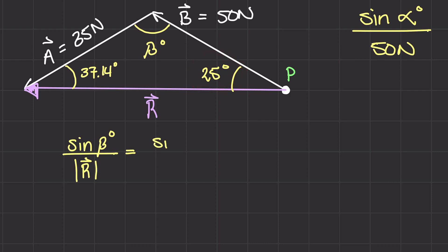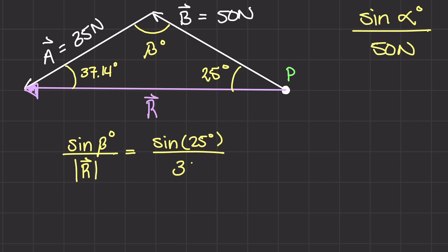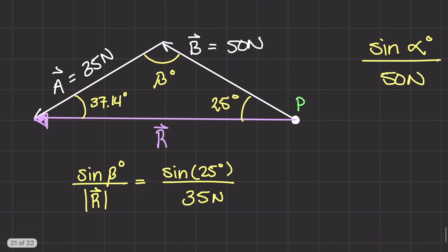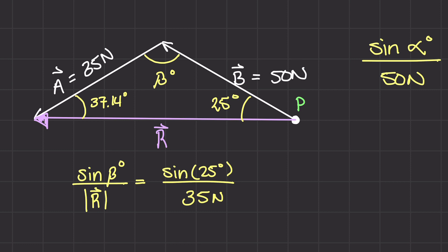Sine of 25 degrees over its opposite side, which is 35 newtons — that's vector A. So we actually have two unknowns in this equation: angle beta and the resultant magnitude R. How do we figure out what beta is? Well, if we go back to this triangle and look at the point where the tip of B meets the tail of A, if I draw a horizontal line there...